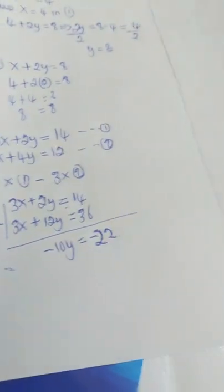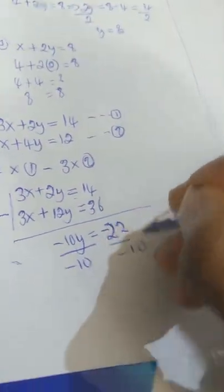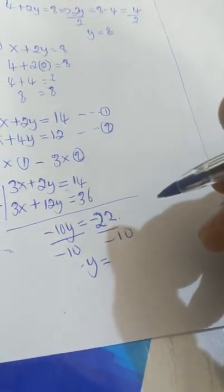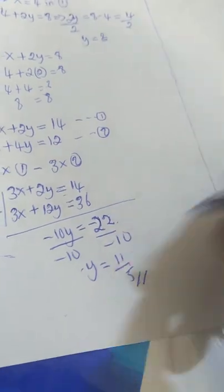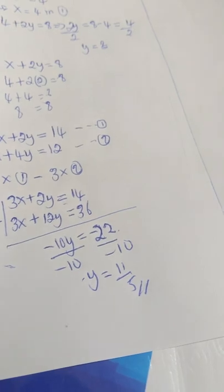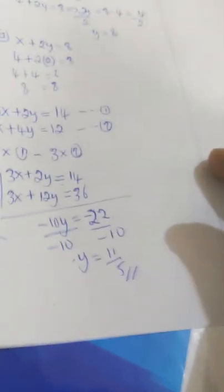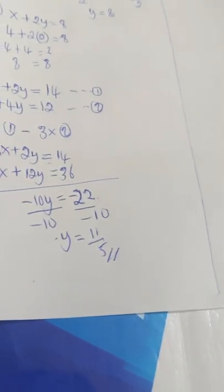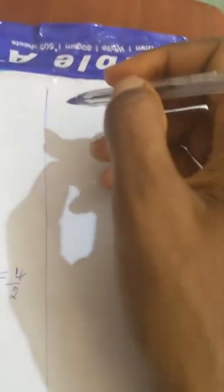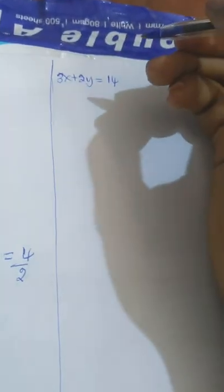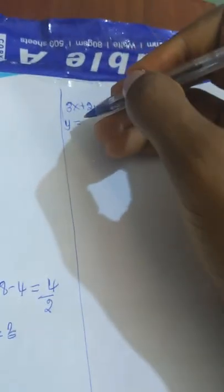That gives minus 22. Divide both sides by minus 10, and you have y equal to 22 over 10, which simplifies to 11 over 5. So the value of y is 11 over 5. Now substituting the value of y into equation one.